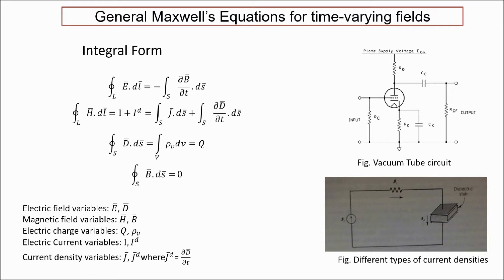Let us start with the general Maxwell's equation for time varying fields. Here I have listed Maxwell's equations in integral form. We have electric variables like electric field E and D, magnetic field variables like B and H, electric charge variables rho_v, electric current variables like I and I_d, and current density variables like J and J_d, where J_d is partial D over partial t. So in these equations we have 10 variables. The purpose of today's lecture is to reduce some of these variables using constitutive law and also to explore the current terms.